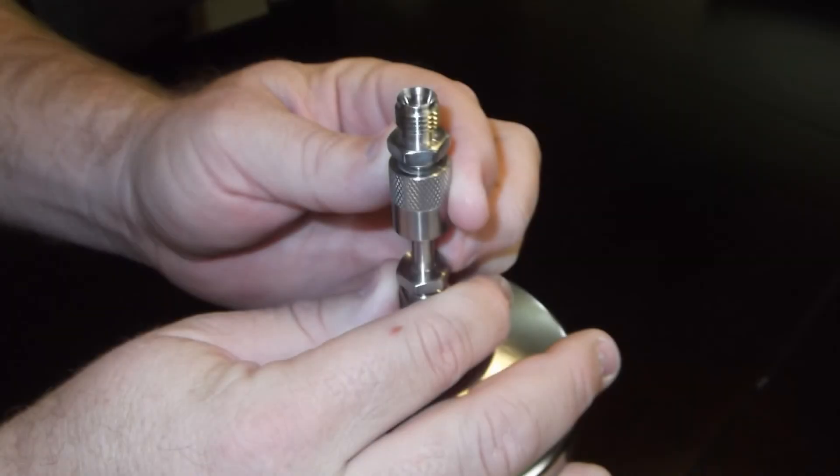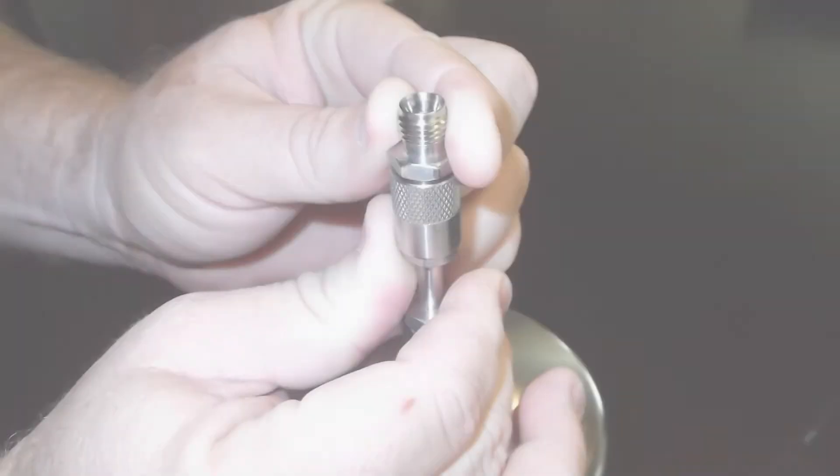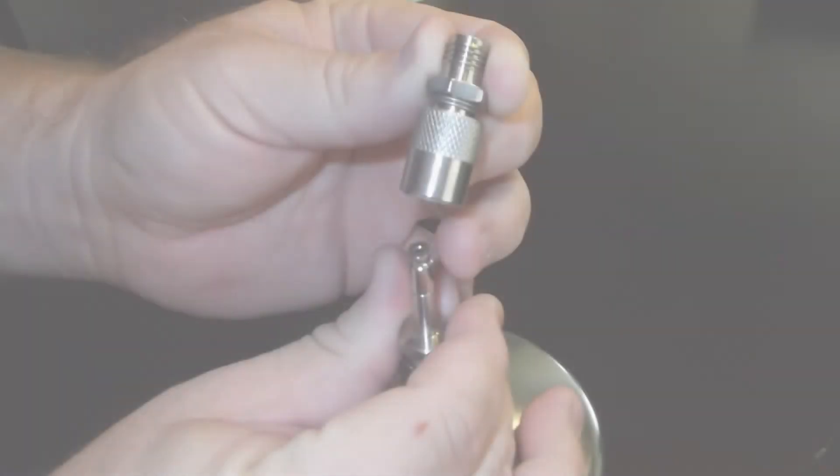Now, remove the grab sample adapter by again pulling the metal sleeve towards the nut and removing it from the minican.